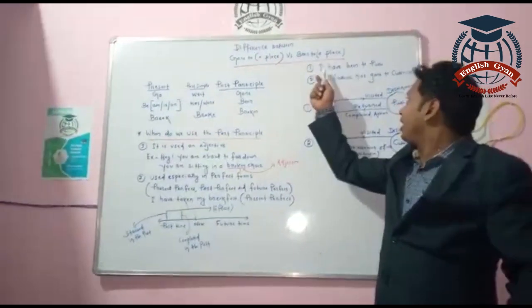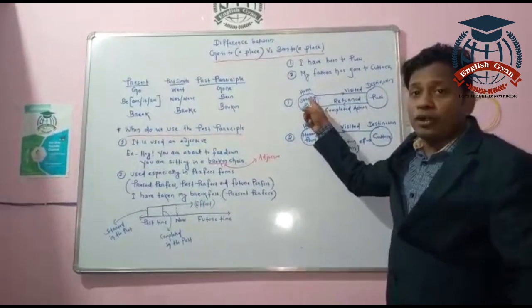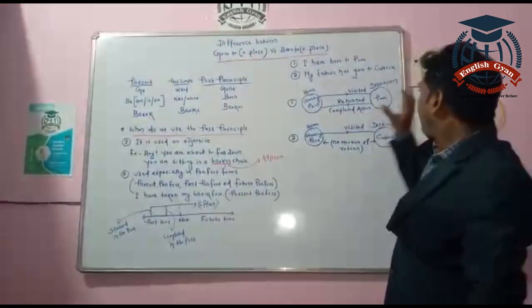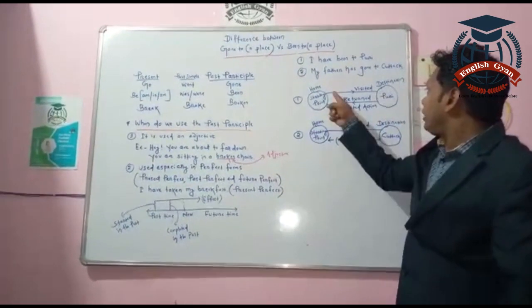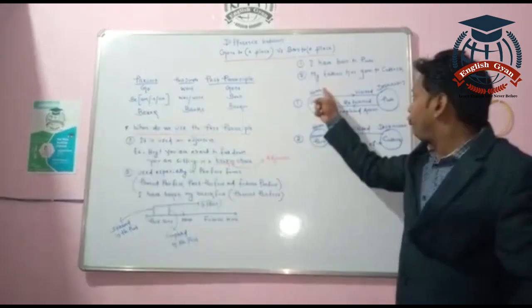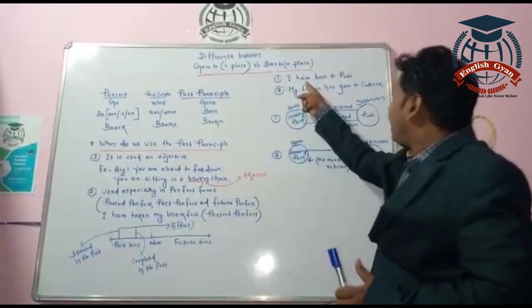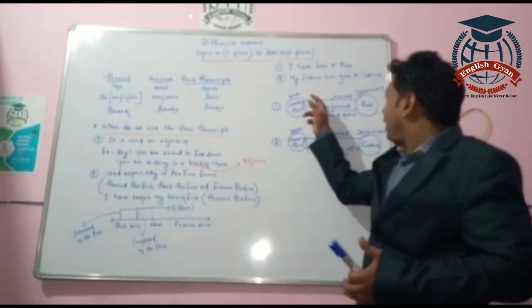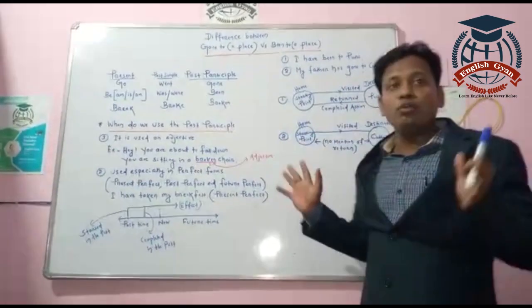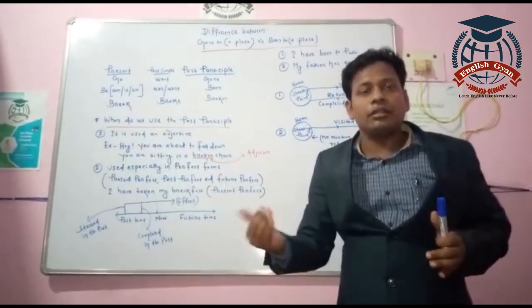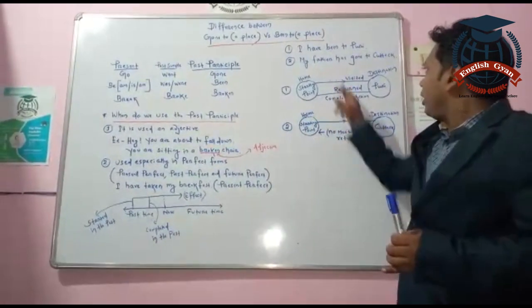So what is the difference between those two sentences? Suppose your starting point is home and your destination is Puri. When you say 'I have been to Puri,' that means you visited Puri and returned. It shows a completed action — the loop has been completed: you visited the place and came back. Whenever that is the case, you use the word 'been.'